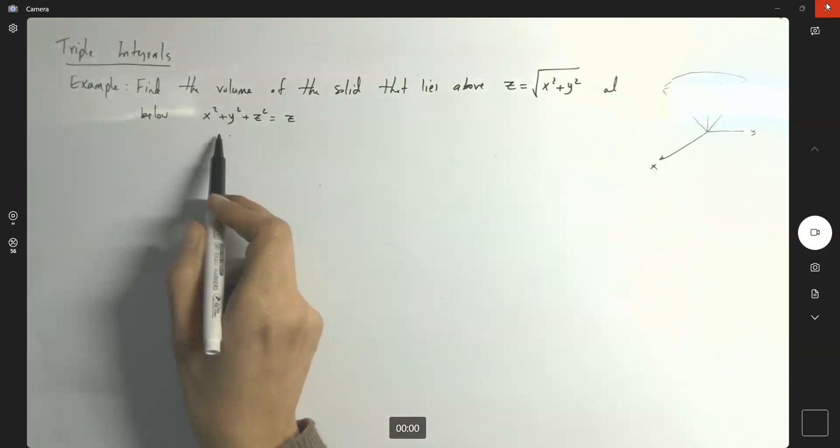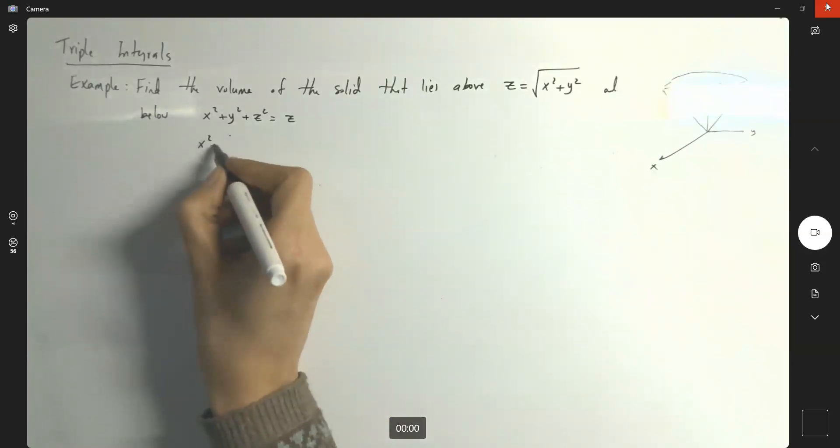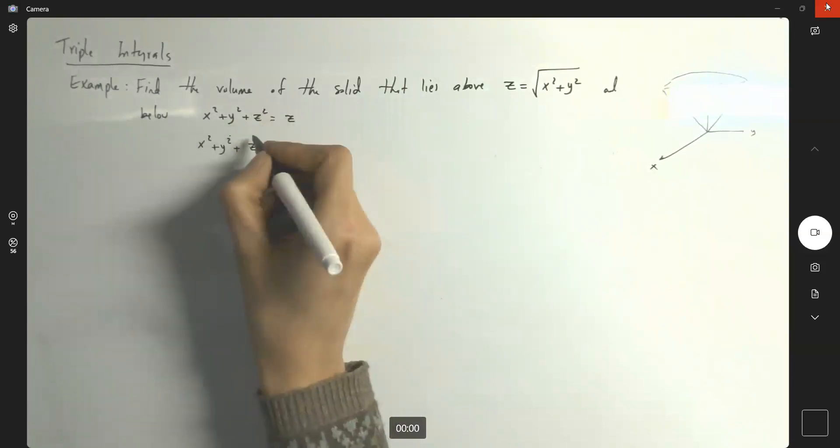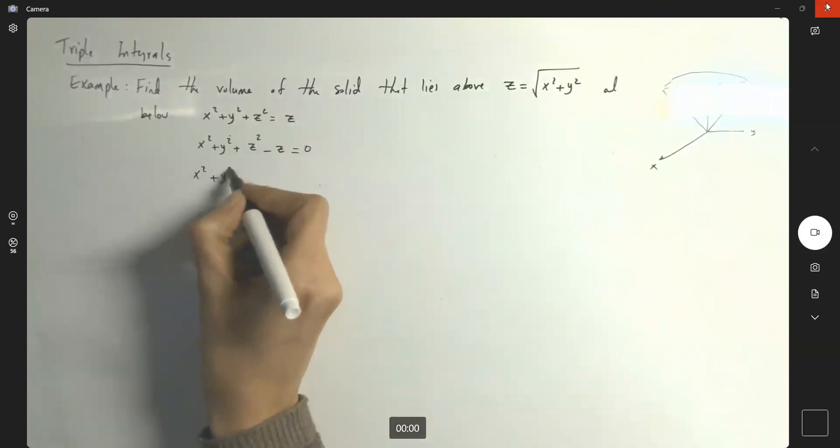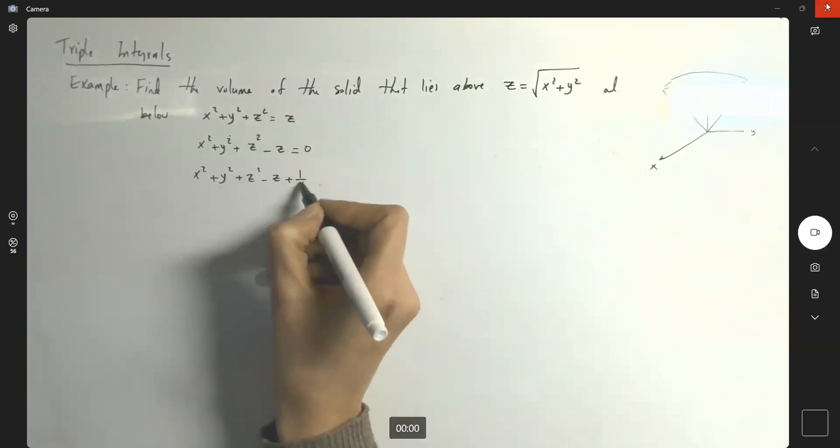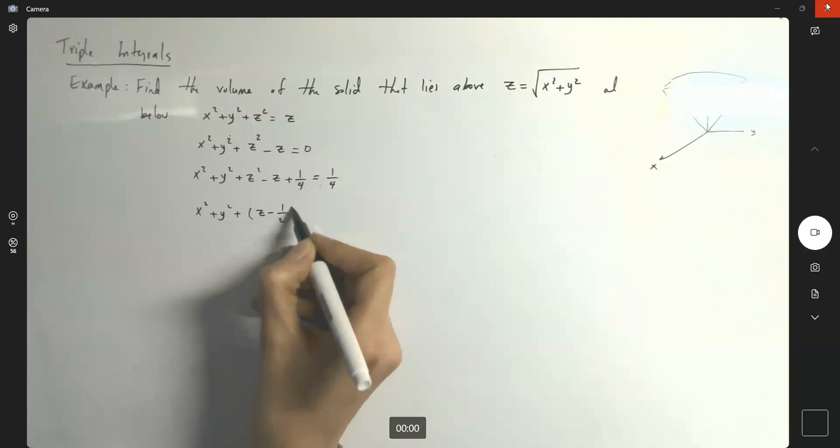To understand the behavior of this sphere in x, y, and z, you can write it as x squared plus y squared plus z squared minus z equals zero and complete the square. From here you get x squared plus y squared, here you have minus z, so you add a fourth to both sides. It becomes x squared plus y squared plus z minus a half squared equals a half squared.